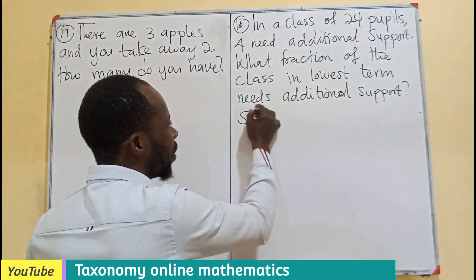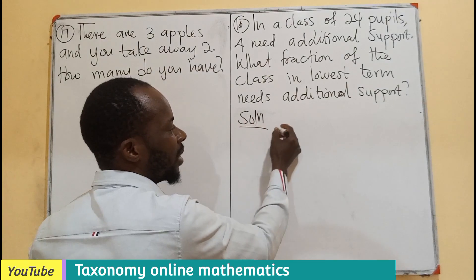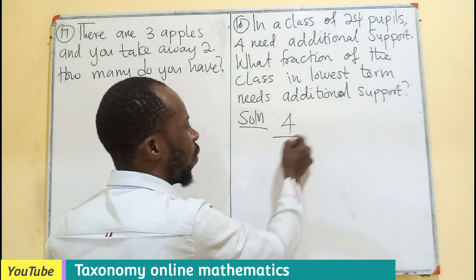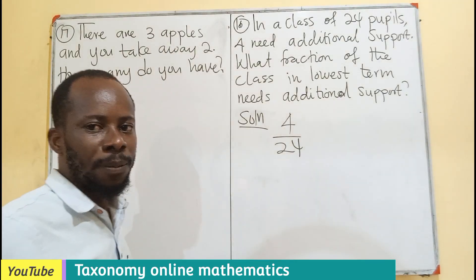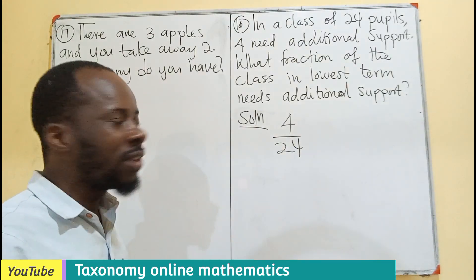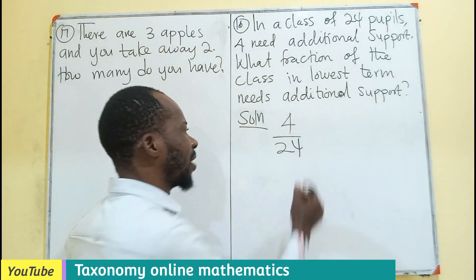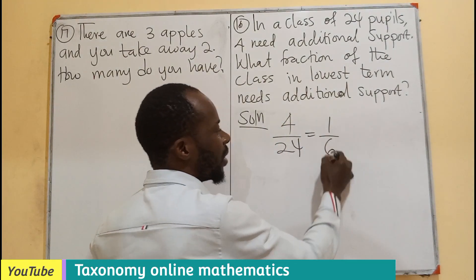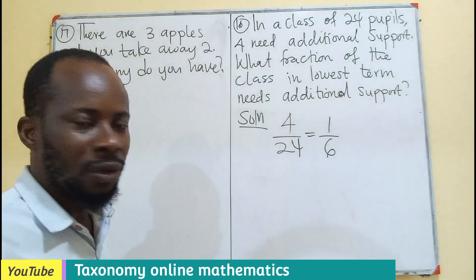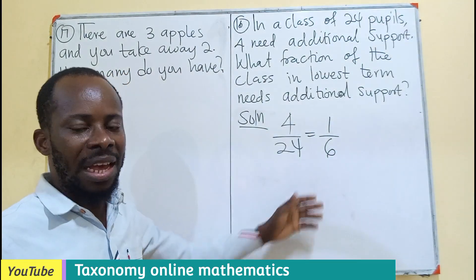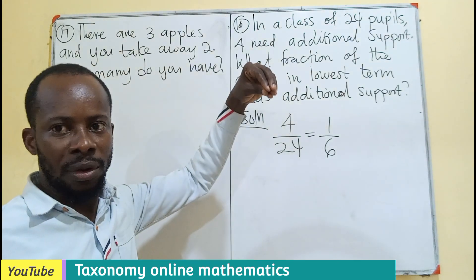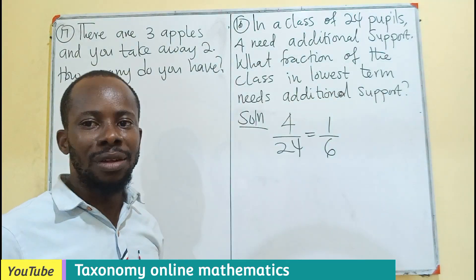In this case, writing this as a fraction is just going to be 4 as part of the class over total number of all people in the class. Then to the lowest term, 4 as a common factor will go into itself 1, go into 24, 6 different times. So the fraction is that if you group the people in groups of 6, one group of them will need additional support.